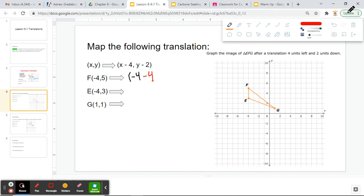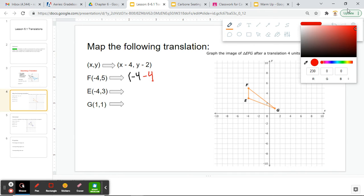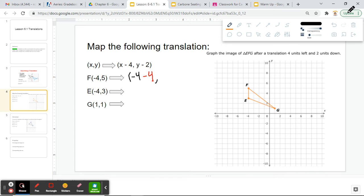Why am I subtracting 4? Well, it tells us for every point, every x-point, we need to do x minus 4. So my x-point is negative 4, so I need to do negative 4 minus 4. Now for my y-coordinate, originally it is 5, and my mapping tells us that for every y-coordinate, I need to subtract 2, so I need to do 5 minus 2. This would become the point negative 8, 3.